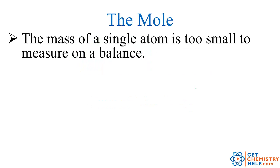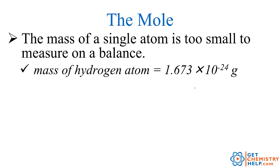Now the reason we need such a huge number of particles is because atoms are so ridiculously small. For example, if you just had one hydrogen atom, it would only weigh about 1.673 times 10 to the negative 24th grams. That is a crazy small number.